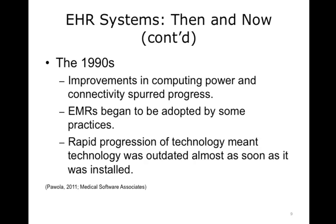Ambulatory clinics began utilizing electronic medical records, or EMRs, during this time as well. However, despite software improvements, adoption rates were comparatively low. This was partly due to the rapid technological advancements in computer and software technologies, which frequently made EMR systems obsolete right out of the box. Additionally, usability issues often made adoption very difficult, particularly for smaller institutions with limited resources.